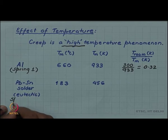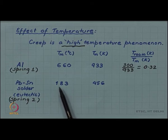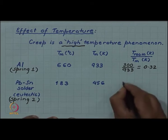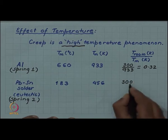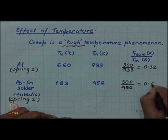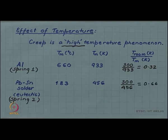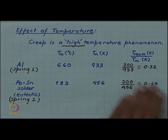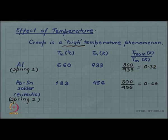Whereas for the lead tin solder wire, your spring 2 in the demo was lead tin solder wire, and as you remember from your phase diagram studies, a eutectic solder has a melting point of 183 degrees Celsius. So, if you take that as the melting point and convert it into Kelvin which is 456, then the same room temperature of 300 Kelvin will now be about 0.66 for the lead tin solder wire. So, the room temperature is 66 percent of the melting point for the solder wire whereas it is only 32 percent of its melting point for aluminium. So, the room temperature test is a high temperature test for lead tin solder wire, but not so high temperature test for aluminium.